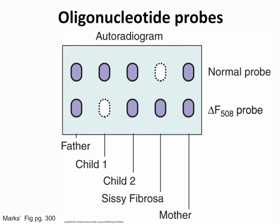Here's a way to test for cystic fibrosis using oligonucleotide probes — expect a question like this on an exam. The father is a carrier since he has both the normal and cystic fibrosis fragments. Child 1 is normal because the child only has the normal fragment. Child 2 is a carrier because it has both. The individual labeled cystic fibrosa is expressing the mutant allele and has cystic fibrosis. The mother is also a carrier.